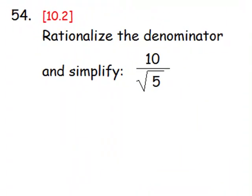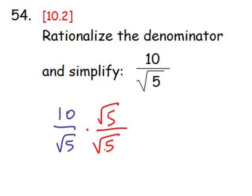Number 54 says rationalize the denominator and simplify. 10 over the square root of 5 can be multiplied by the square root of 5 over itself. And the reason we want to do that, of course, is to create a perfect square in the denominator, the square root of 25.